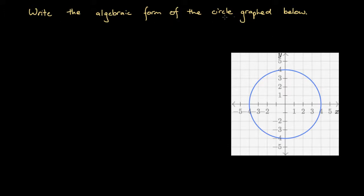Write the algebraic form of the circle graphed below. Here we're given this circle, and this circle has...